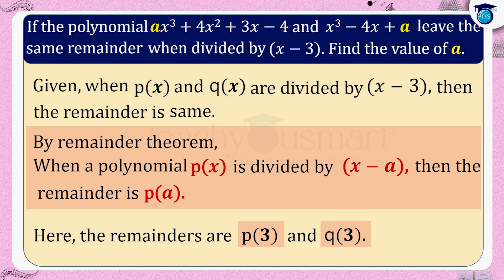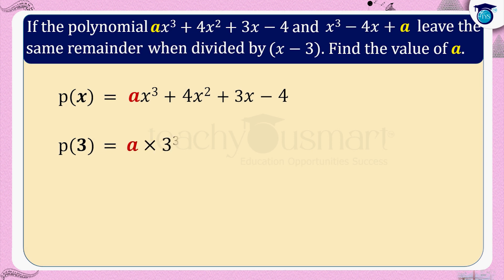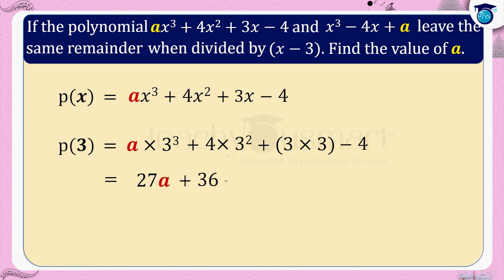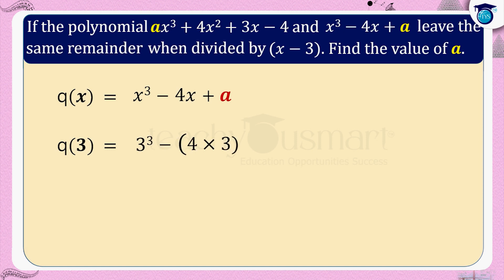Let us find p of 3 and q of 3. We have p of x equals ax cubed plus 4x squared plus 3x minus 4. Then p of 3 equals a multiplied by 3 cubed plus 4 multiplied by 3 squared plus 3 multiplied by 3 minus 4, equals 27a plus 36 plus 9 minus 4, equals 27a plus 41. Next, q of x equals x cubed minus 4x plus a. So q of 3 equals 3 cubed minus 4 multiplied by 3 plus a, equals 27 minus 12 plus a, equals 15 plus a.